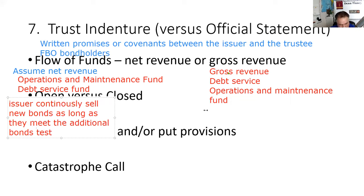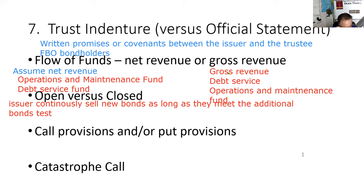I go to my CFO at SFO and ask how we're looking on the additional bonds test. He says we promised a debt service coverage ratio of two-to-one and we're where we need to be. I ask how many bonds I can issue without violating the test — he says we're good for $200–$300 million. So I call my banker and we modernize, update, and expand the facility — new runway, new parking structure, new terminal.